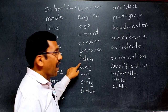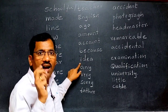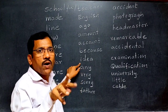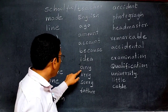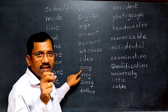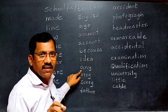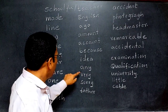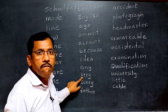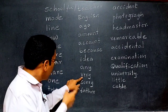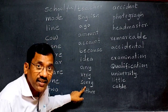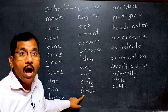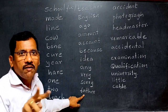'Idea' — 'I' and 'ear' — two vowel sounds, so 'idea' is a word of two syllables. 'Any' — 'A' and 'E' — two vowel sounds, so 'any' is two syllables. 'Very' — two syllables. 'Sorry' — two syllables. 'Father' — 'fa' and 'ther' — two vowel sounds, so 'father' is a word of two syllables.